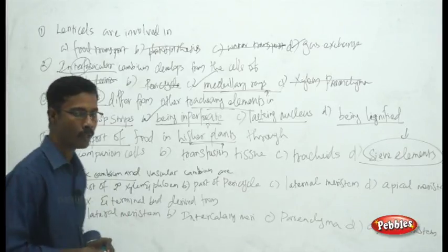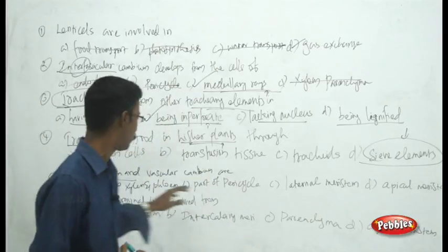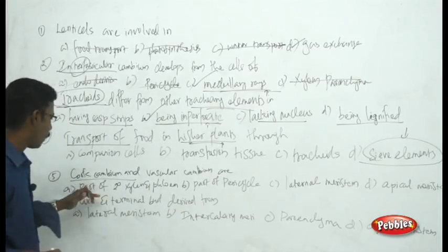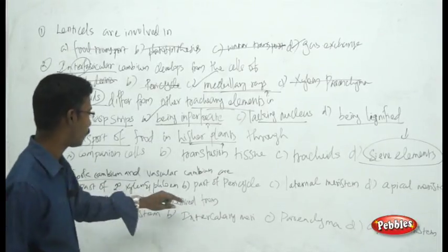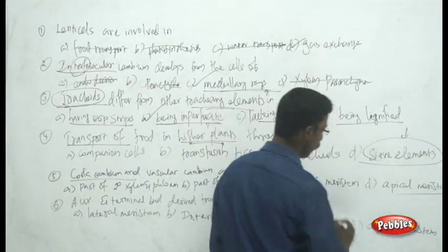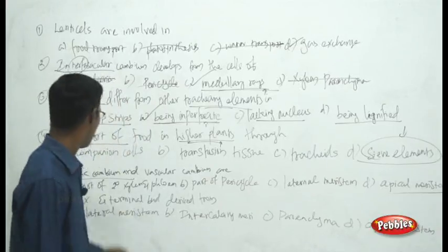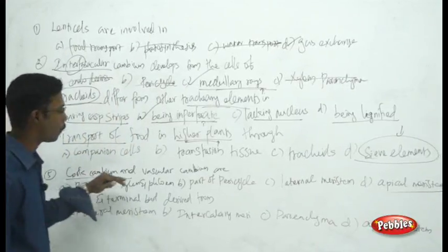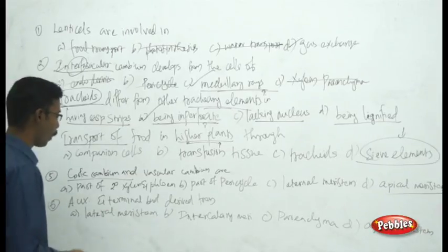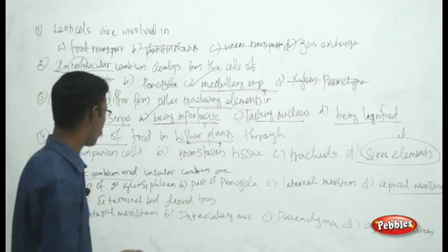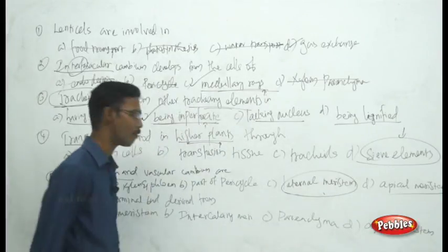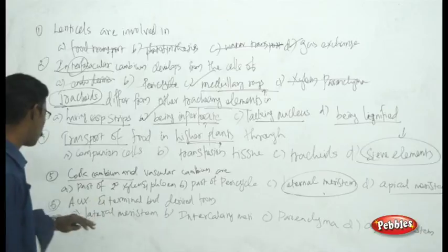Next question: cork cambium and vascular cambium are classified as what? The choices are part of secondary xylem and phloem, part of pericycle, lateral meristem, and apical meristem. While they participate in forming secondary xylem and phloem, they are not a part of those structures themselves. Cork cambium and vascular cambium are lateral meristems.